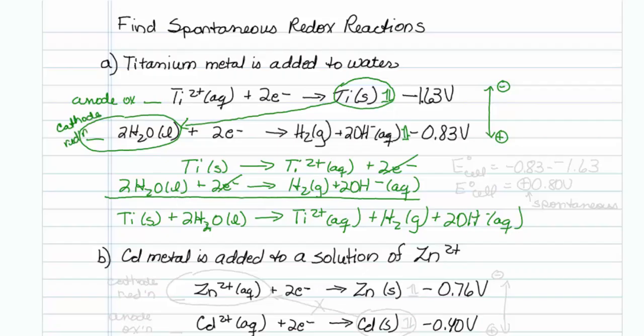So you can always check E cell. E cell is going to be equal to cathode minus anode. So that would be -0.83 minus a -1.63. A minus and minus becomes a positive, so we're left with +0.80 volts. Positive voltage means spontaneous.